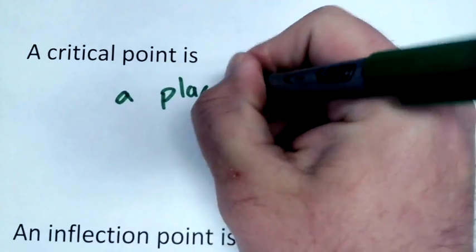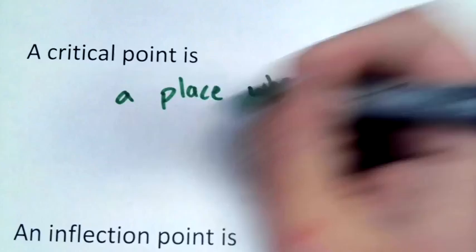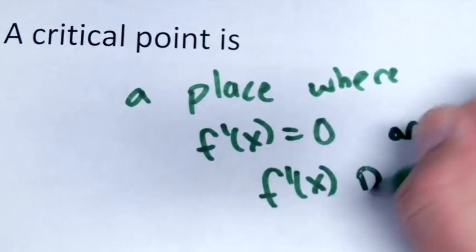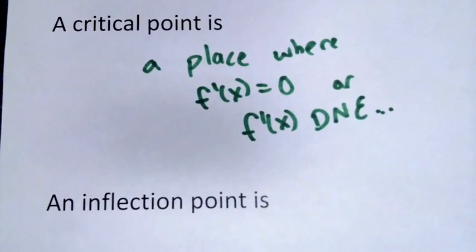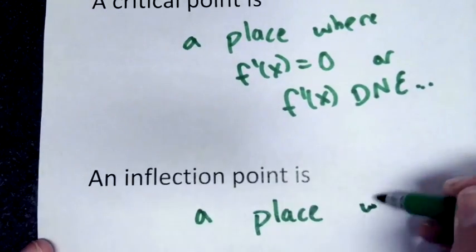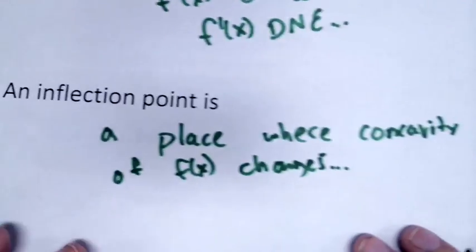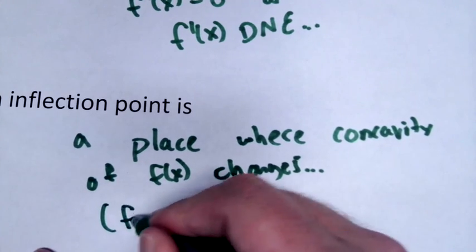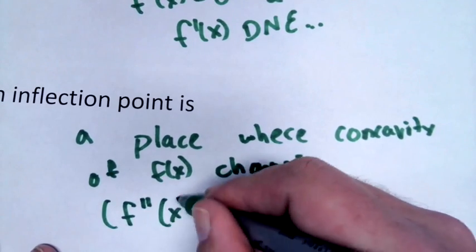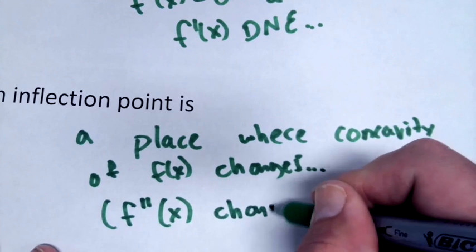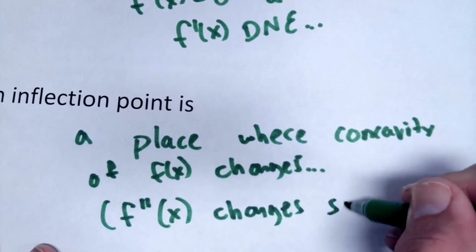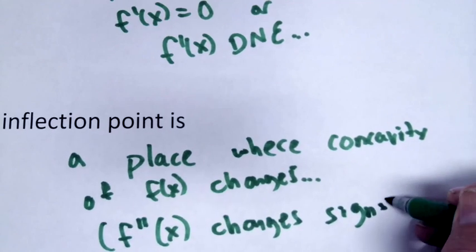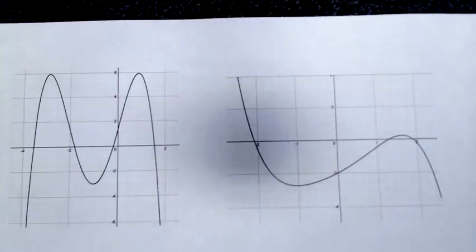So what is a critical point? A place where f prime of x is equal to 0, or f prime of x does not exist. And then what is an inflection point? It's a place where the concavity changes. And if the concavity changes, that means that f double prime of x has changed signs — either from positive to negative, or from negative to positive.